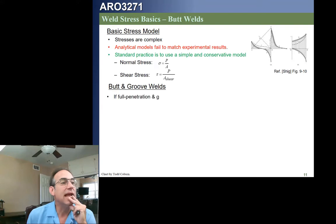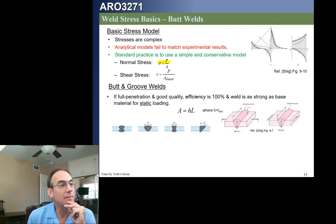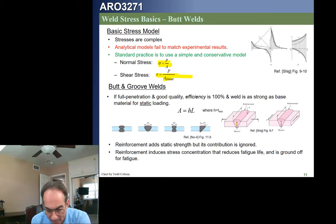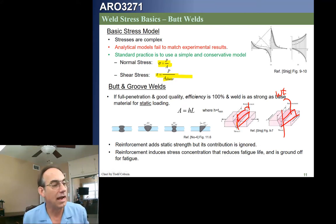Instead of the previous complex approach, we're going to use two simple relations. If normal stress is dominant, stress equals P over A. If it's a shear stress, it's also P over A, but the shear area is trickier to compute. For a butt weld, we draw a section cut and the area is simply the plate thickness times the plate width — we use the whole cross-sectional area of the weld.